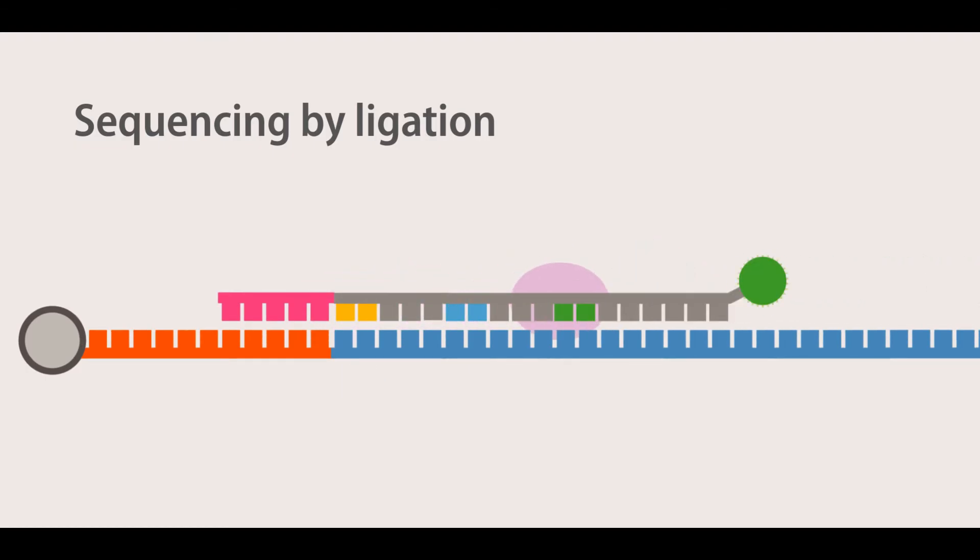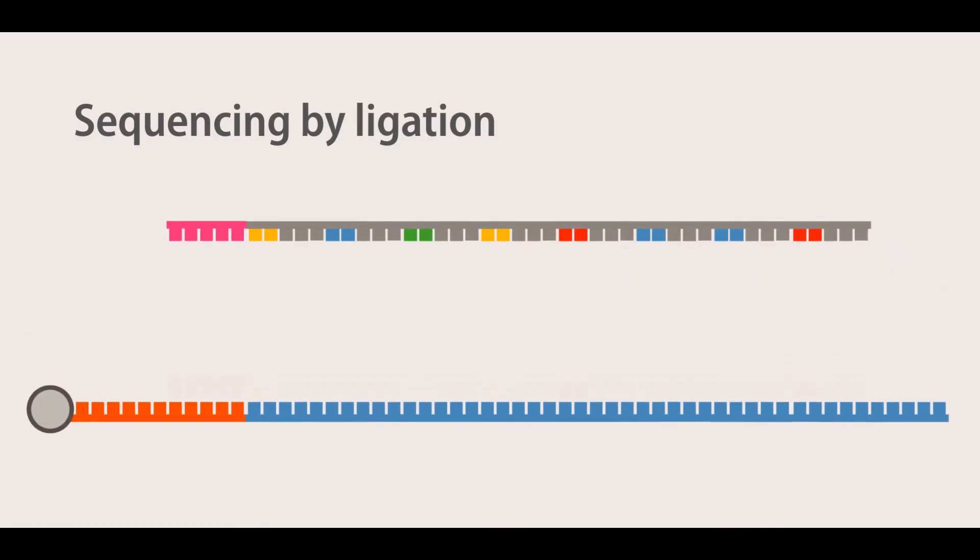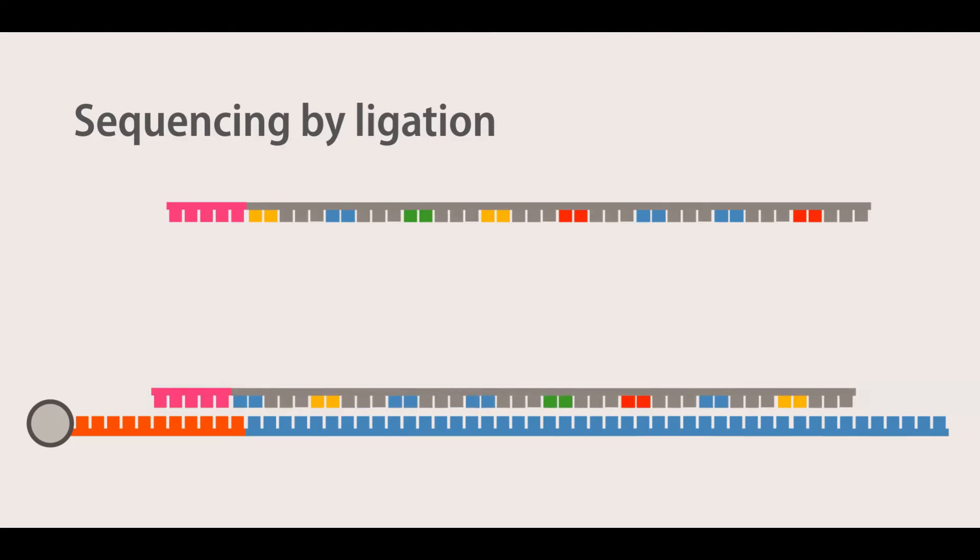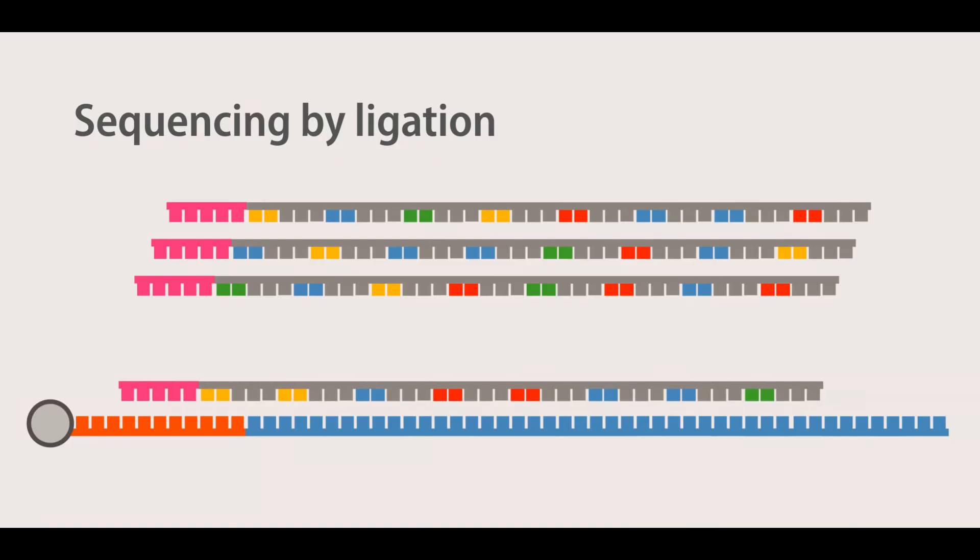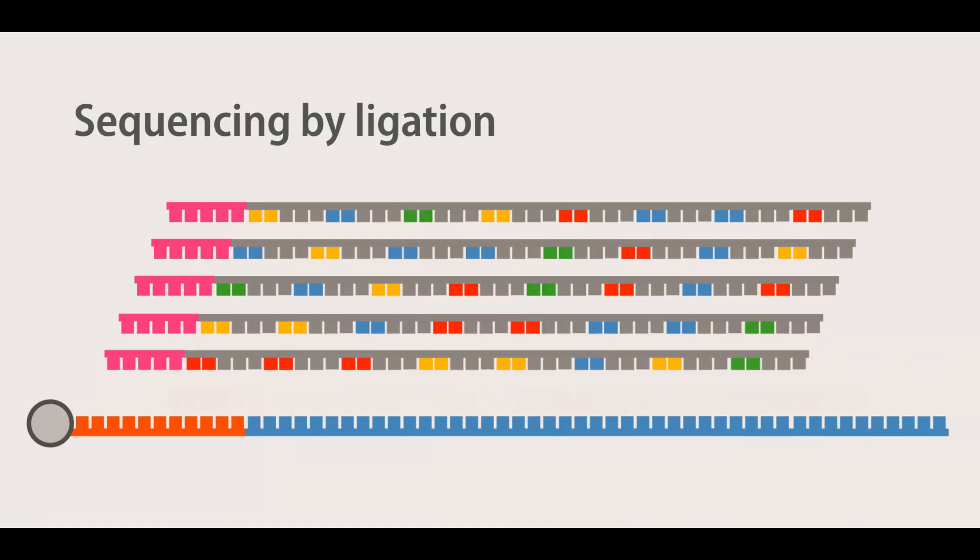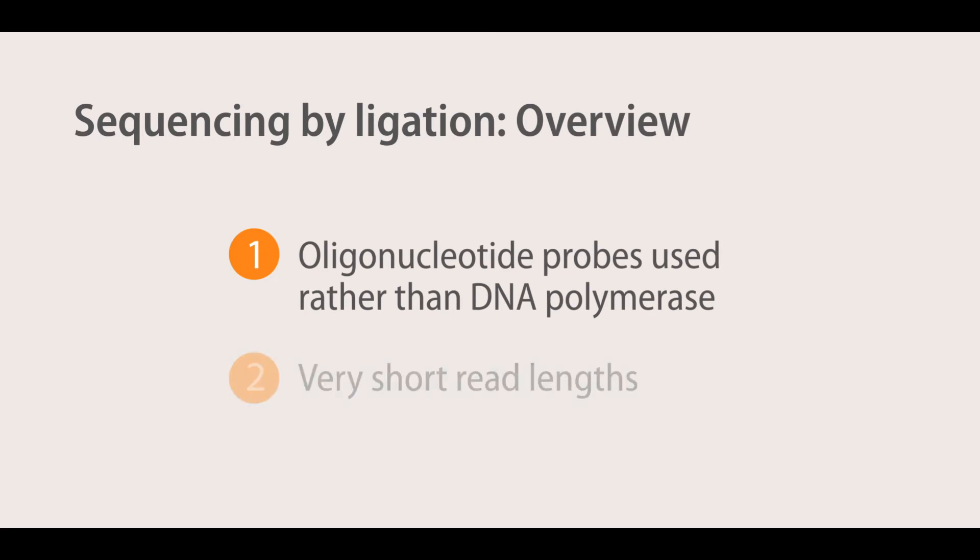After approximately seven cycles of ligation, the DNA strand is denatured and another sequencing primer, offset by one base from the previous primer, is used to repeat these steps. In total five sequencing primers are used. The major disadvantage of this technology is the very short sequencing reads generated.